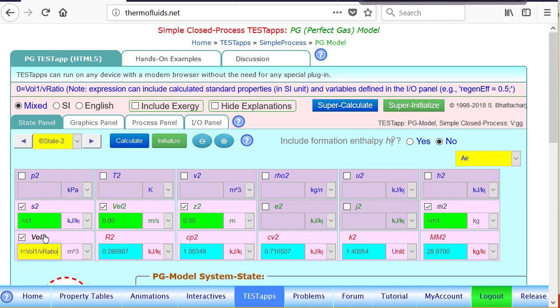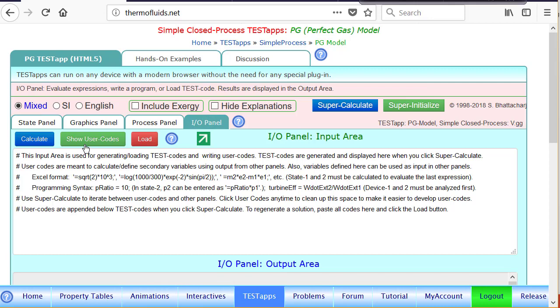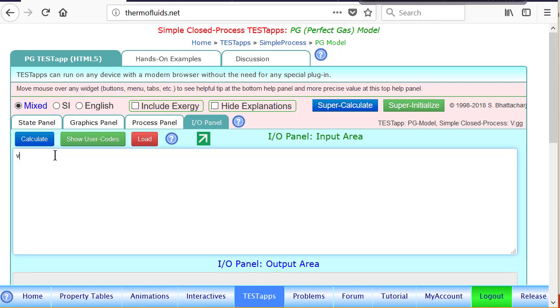Of course, we haven't defined what V ratio is, so this cannot be evaluated. If I try to calculate, you'll see the background become white, telling me that something is wrong in this expression. There's no syntax error, so all you need to do is go to the IO panel, isolate user code, and declare the variable.